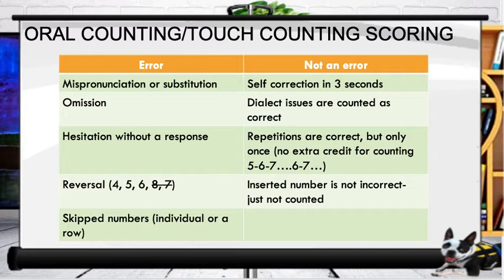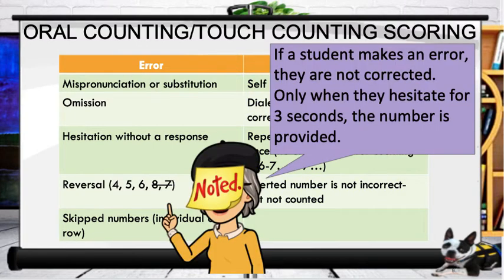Things that sound like errors but are not errors: self-correction within three seconds, and dialect or accent issues — these are counted as correct. Repetitions are correct but only once, so there's no extra credit for repeated counting. Inserted numbers are just not counted. Remember, if a student makes an error they are not corrected; only when they hesitate for three seconds is the number provided.